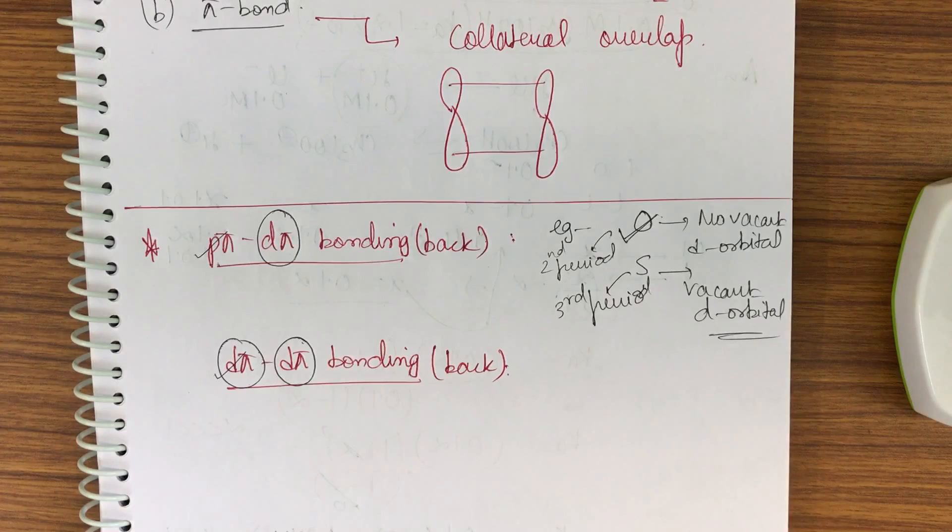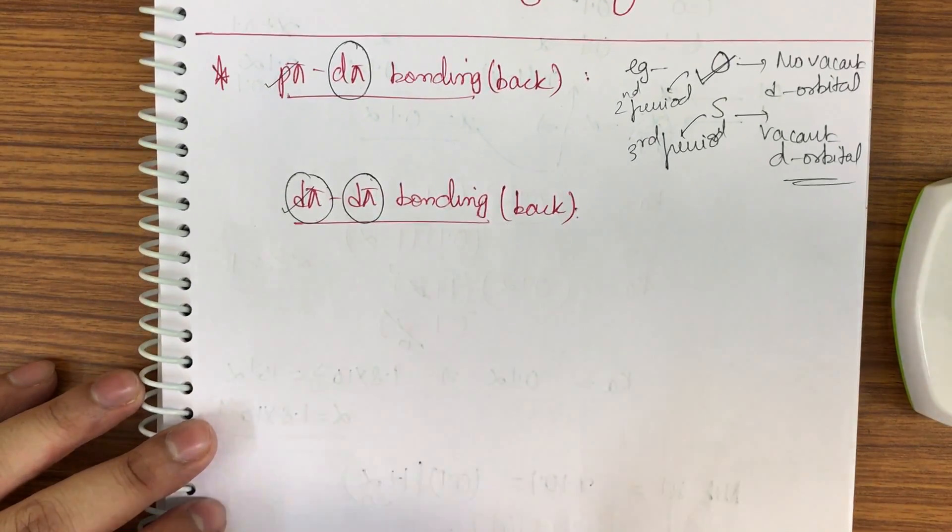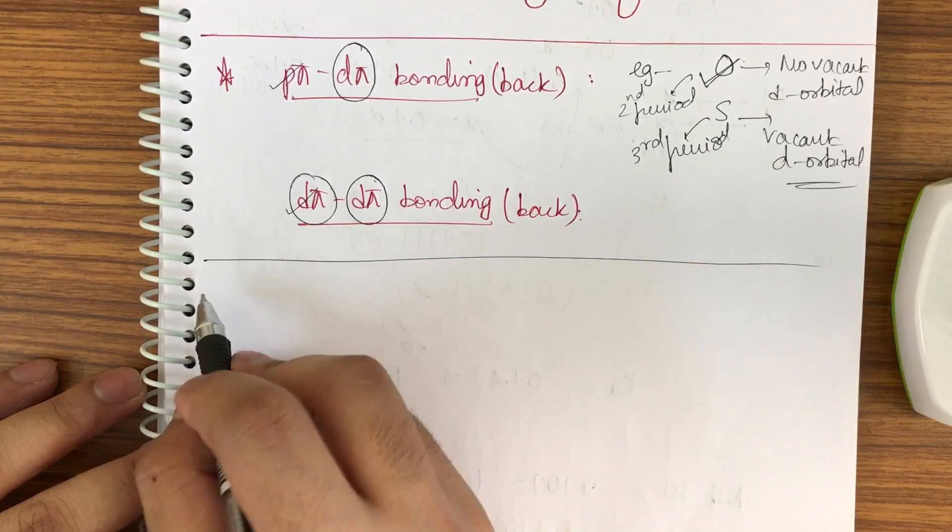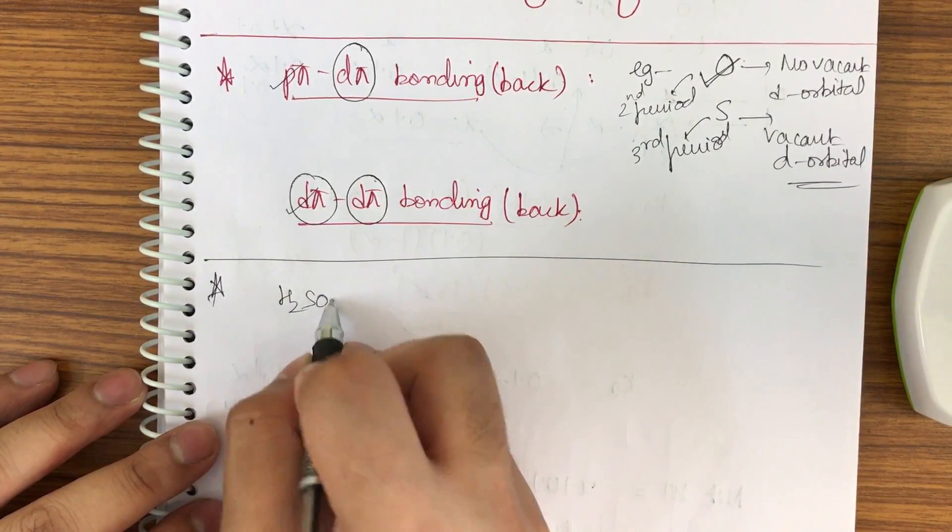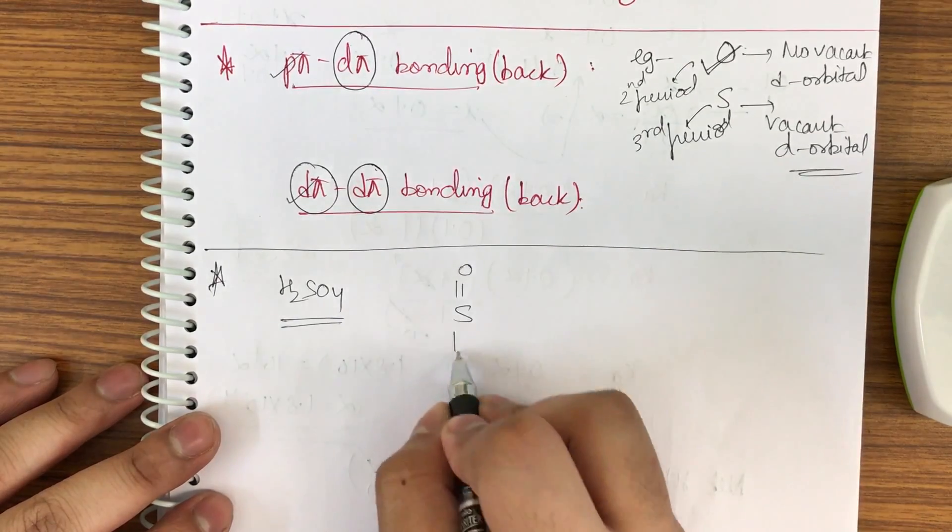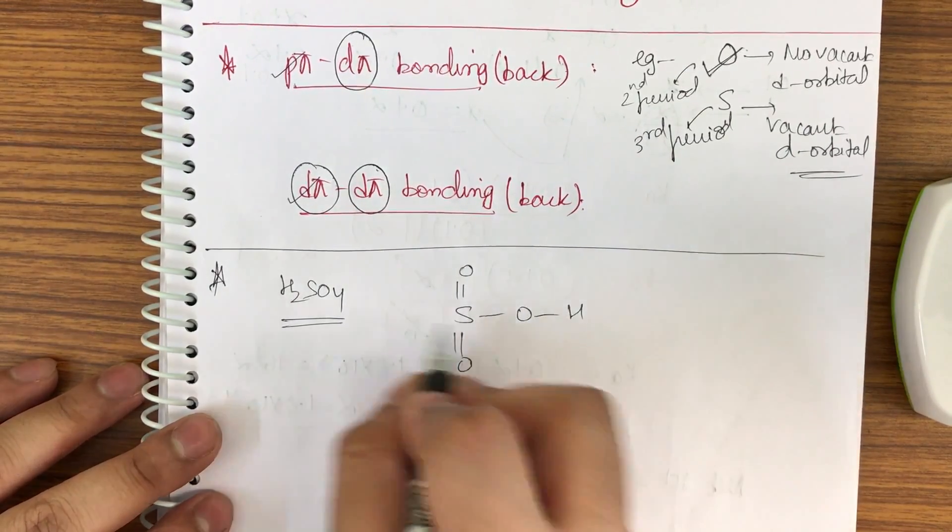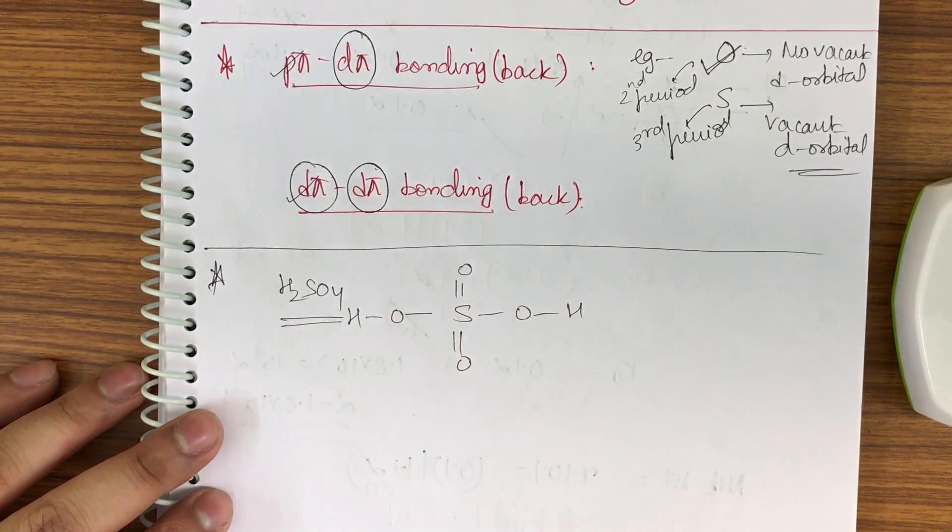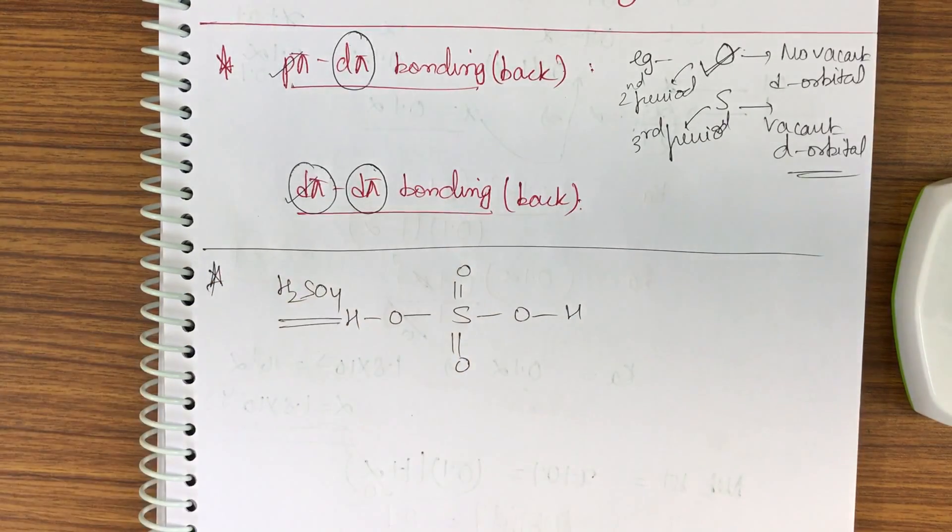Now how to decide if a ppi-dpi backbonding is formed or some other type of simple bonding is formed? Let me take the simplest example - that can be H2SO4. Draw the structure for it.